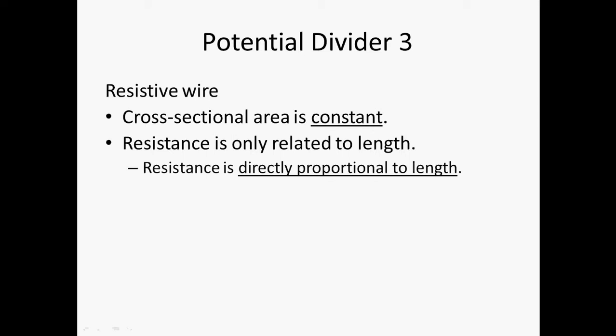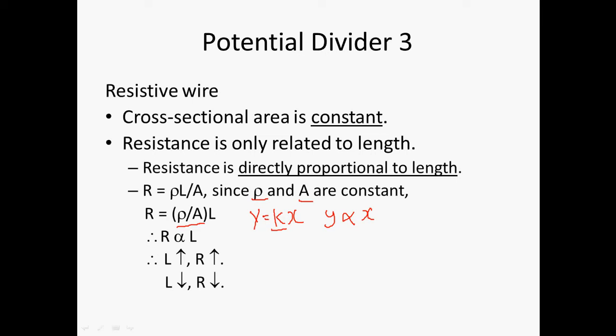You can effectively say that the relationship is directly proportional. How can we prove it? We can look at this equation again. Since resistivity ρ and A are constant, you can factorize it and consider this expression to be similar to Y = KX. Because K is similar to your ρ/A, if you study math, you will know that you can say Y is directly proportional to X. Similarly, I can also say that R is directly proportional to L. If L increases, R increases. If L decreases, R decreases.